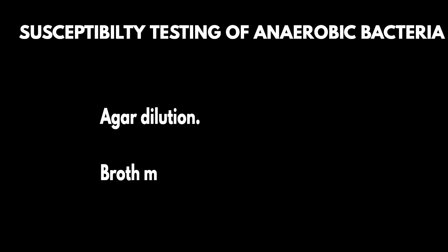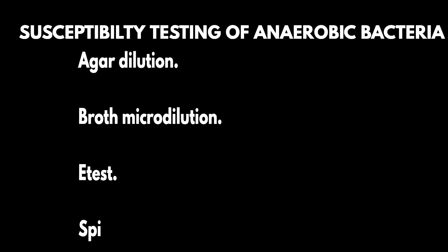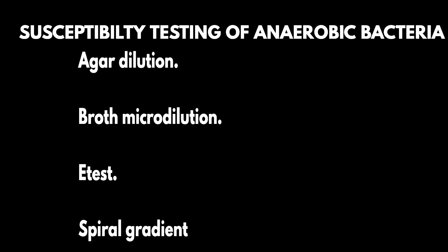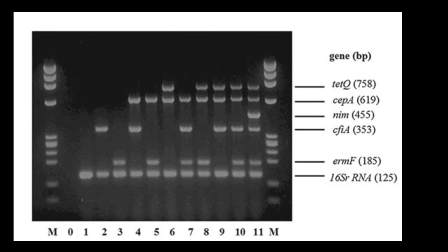Susceptibility testing is done by the following methods: agar dilution, broth microdilution, E-test, and spiral gradient endpoint system. PCR-based tests for resistance are present but not yet available commercially.